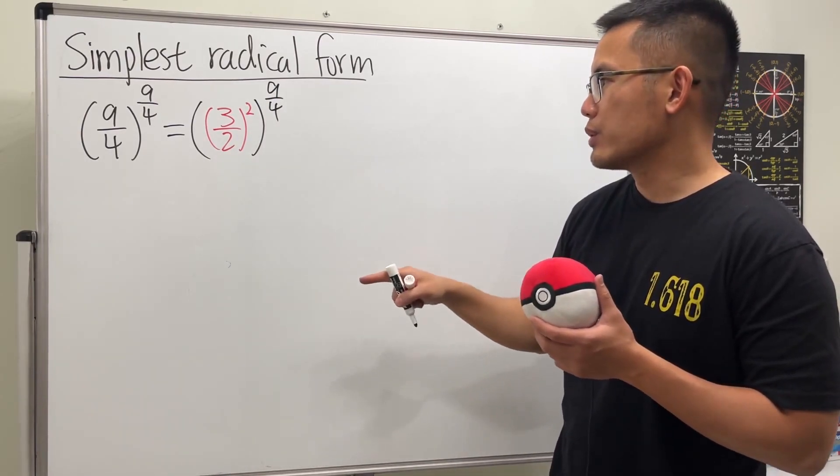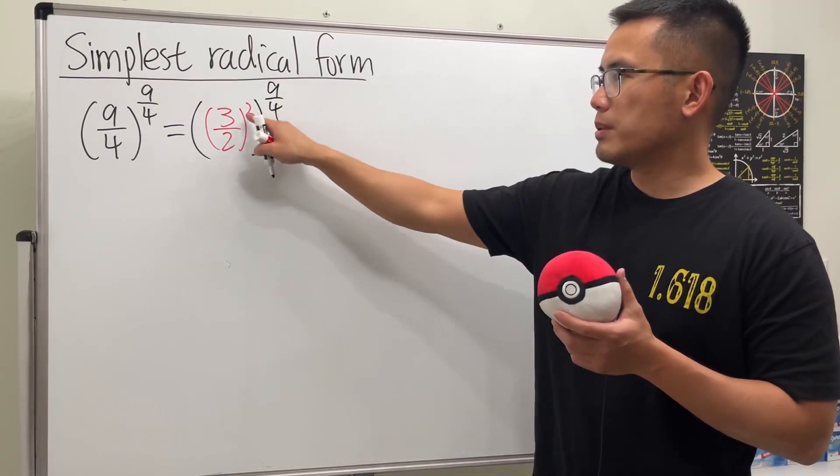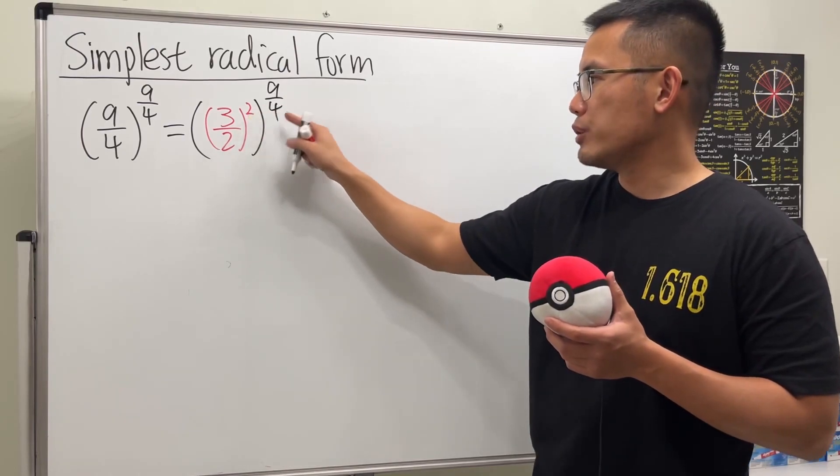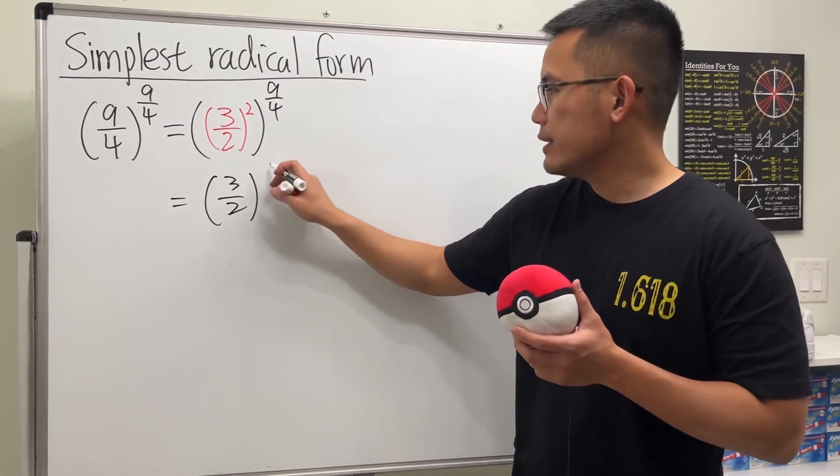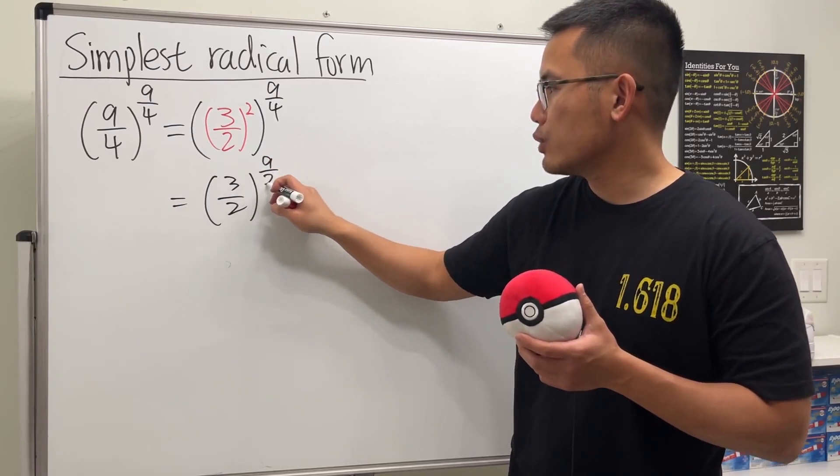And the reason that we want to do this is so that we can just multiply these two powers, and they cancel out pretty nicely, and we will get 3 over 2 raised to the 9 over 2 power.